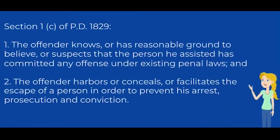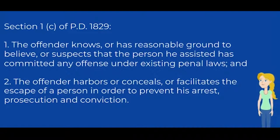Section 1, Paragraph C of PD No. 1829: the elements are, first, that the offender knows or has reasonable ground to believe or suspects that the person he assisted has committed any offense under existing penal laws; and second, that the offender harbors, conceals, or facilitates the escape of a person in order to prevent his arrest, prosecution, and conviction.